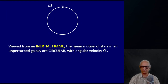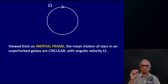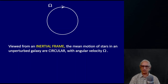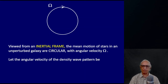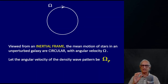Let us look at a galaxy from an inertial frame. In the inertial frame the galaxy is rotating — the stars, gas clouds, and dust clouds are going around the center. The mean motion of stars in an unperturbed galaxy is circular, with a little excursion about the plane of the orbit, with angular velocity omega. This angular velocity depends on the radius: omega is a function of galactocentric radius r. Let the angular velocity of the pattern be omega_p — the spiral structure rotates rigidly with angular velocity omega_p, the same at all galactocentric radii.